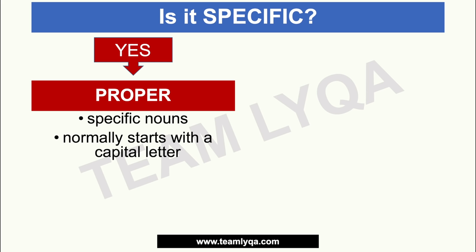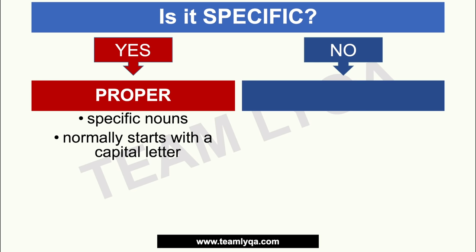How do we spot proper nouns? We look at the first letter — that's a telltale sign. If the letter at the start of the name is capitalized, it's probably a proper noun. Now, if the answer to 'is it specific?' is no — it's not specific — then it's general, and that's what we call a common noun.